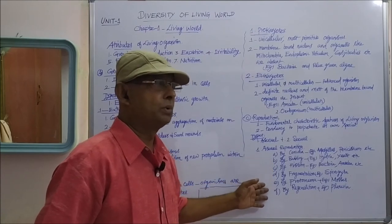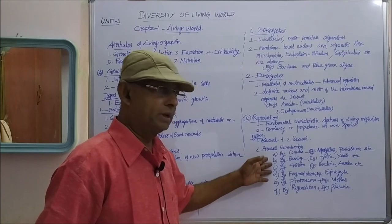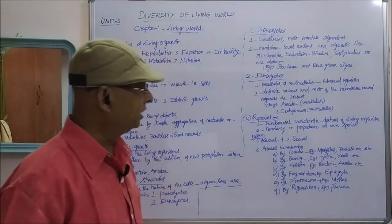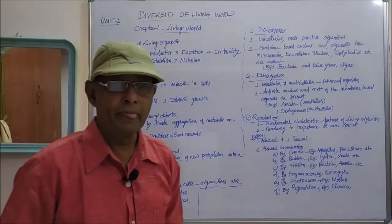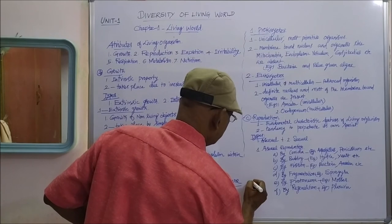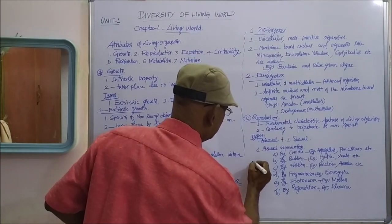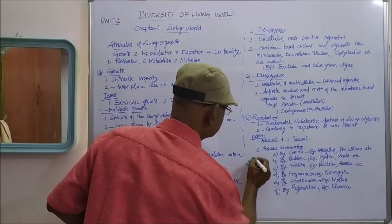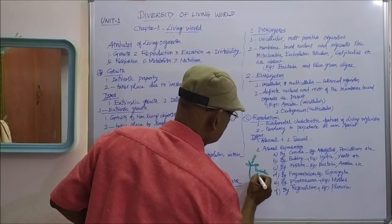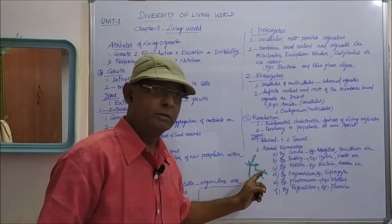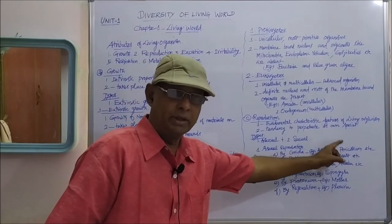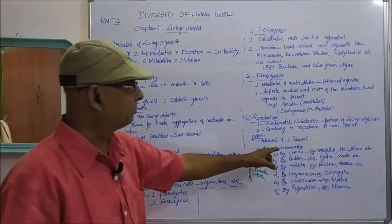Several methods of asexual reproduction exist. The first is by conidia — in the case of Aspergillus, the erect mycelium produces spores outside called conidia spores. Each one is dispersed by wind, reaches a moist suitable substratum, and grows into a new mycelium of Aspergillus or Penicillium. So reproduction takes place by conidia in these fungi.